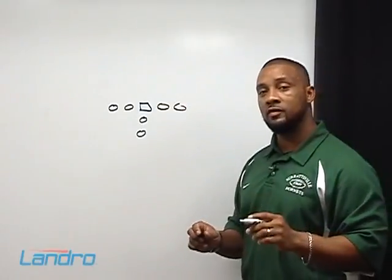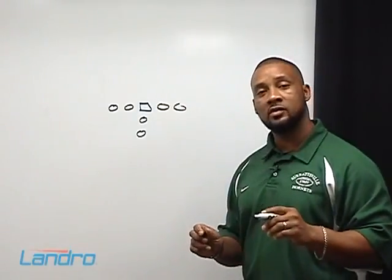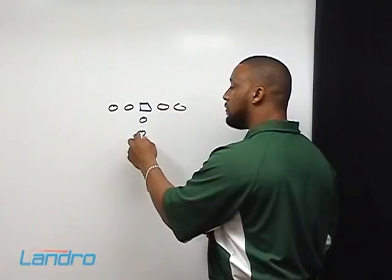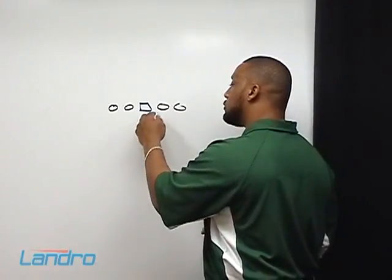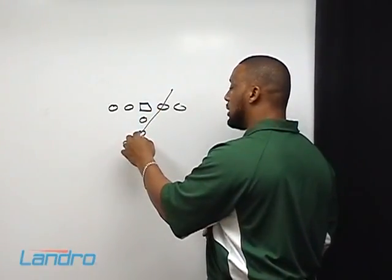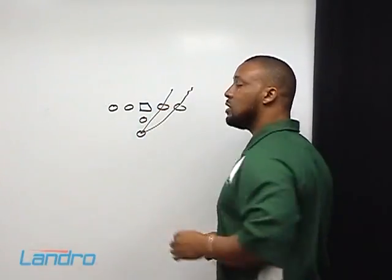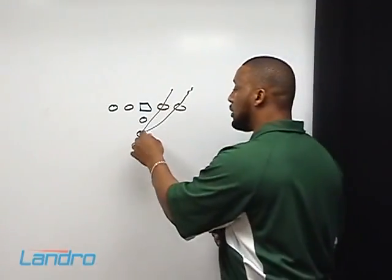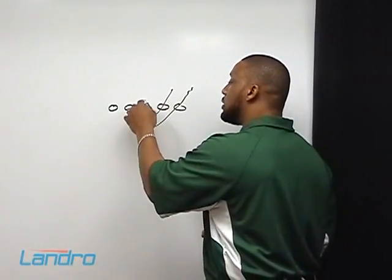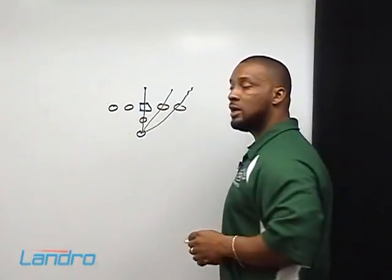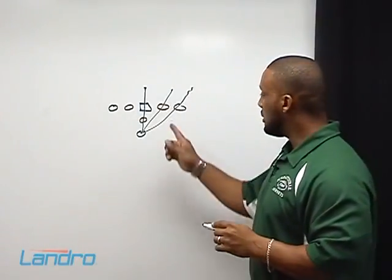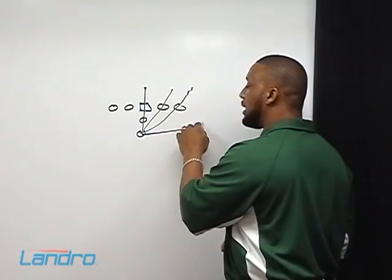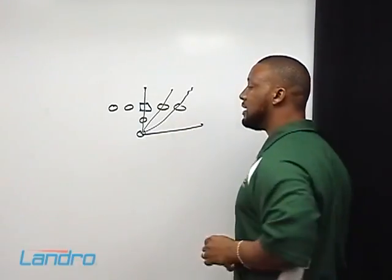As part of this offense, here's why the speed option and the midline are so important. When you run the spread-veer offense, the veers run off of the guard and the outside veers run off the tackle. You want to incorporate the midline and the speed option, which allows you to run straight up the middle and read an A-gap defender, and also the speed option allows you to read the D-gap defender.